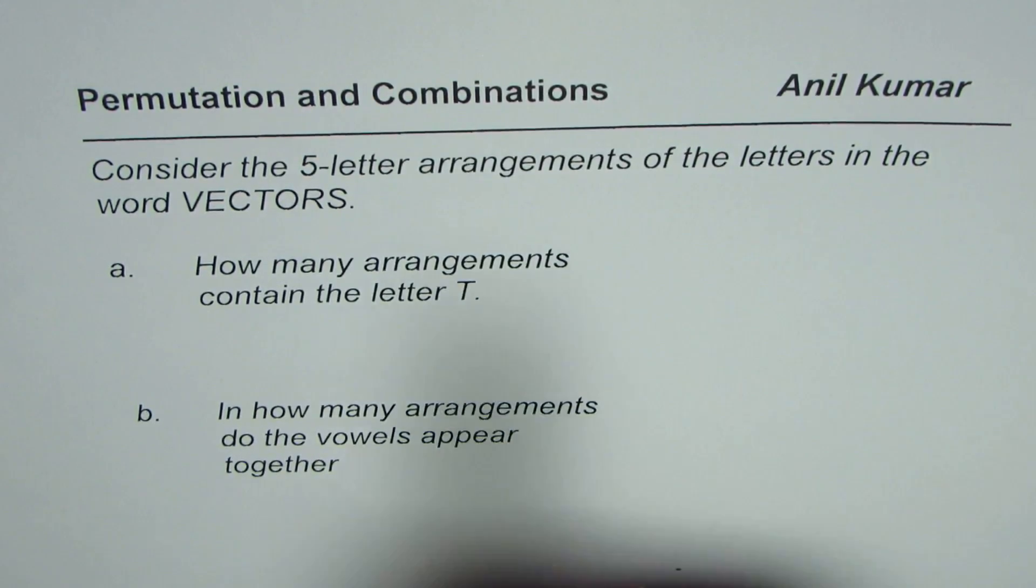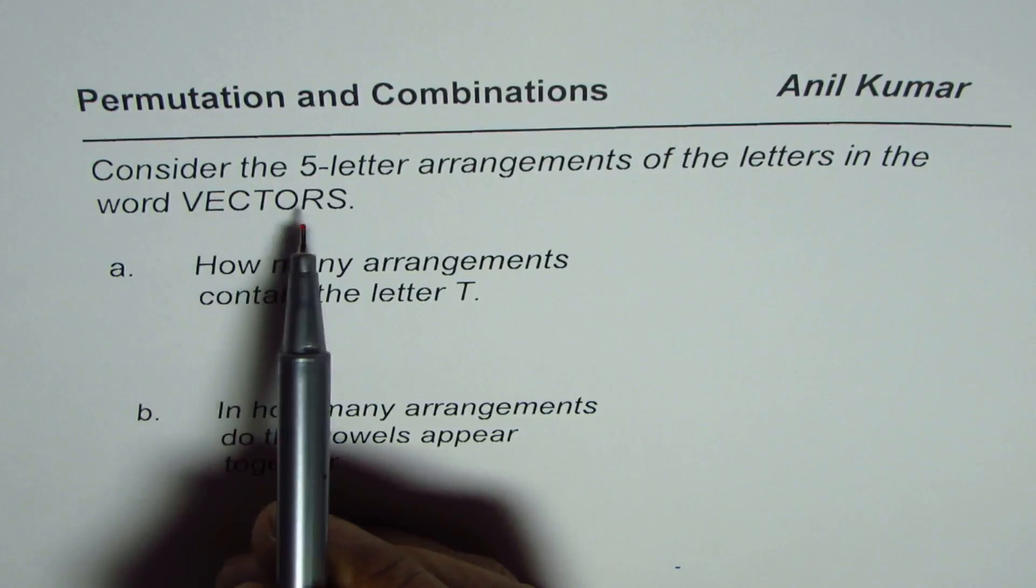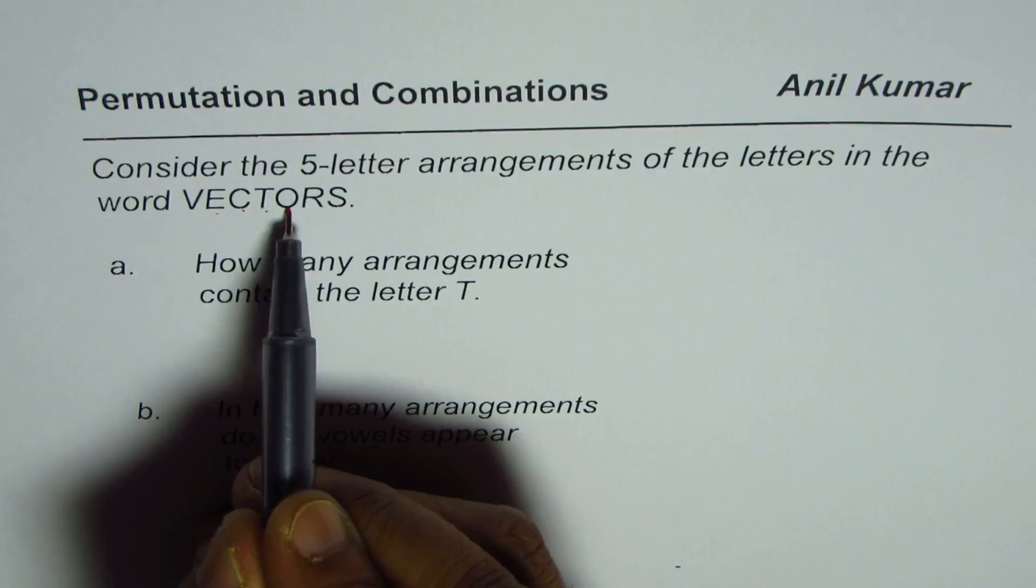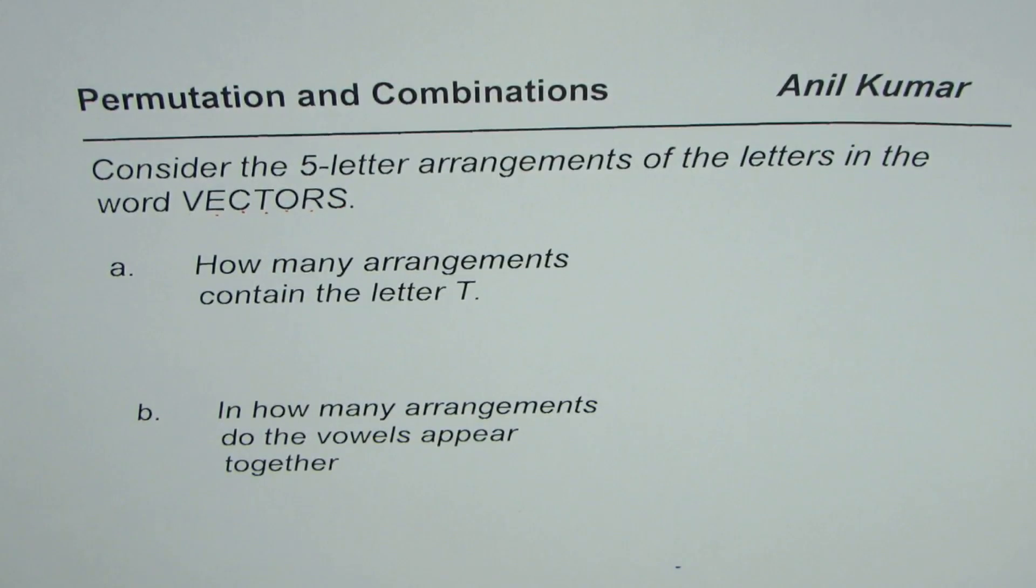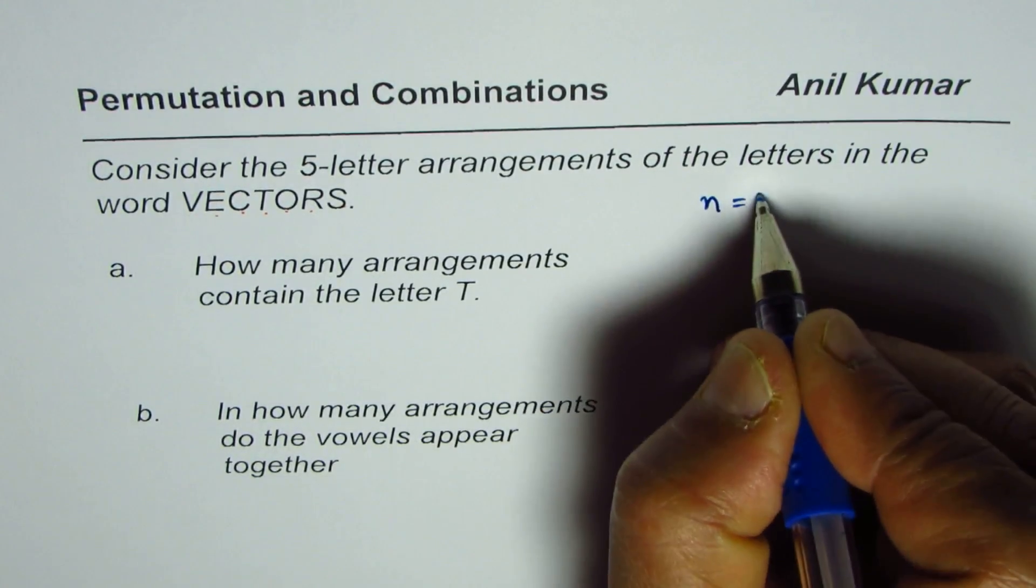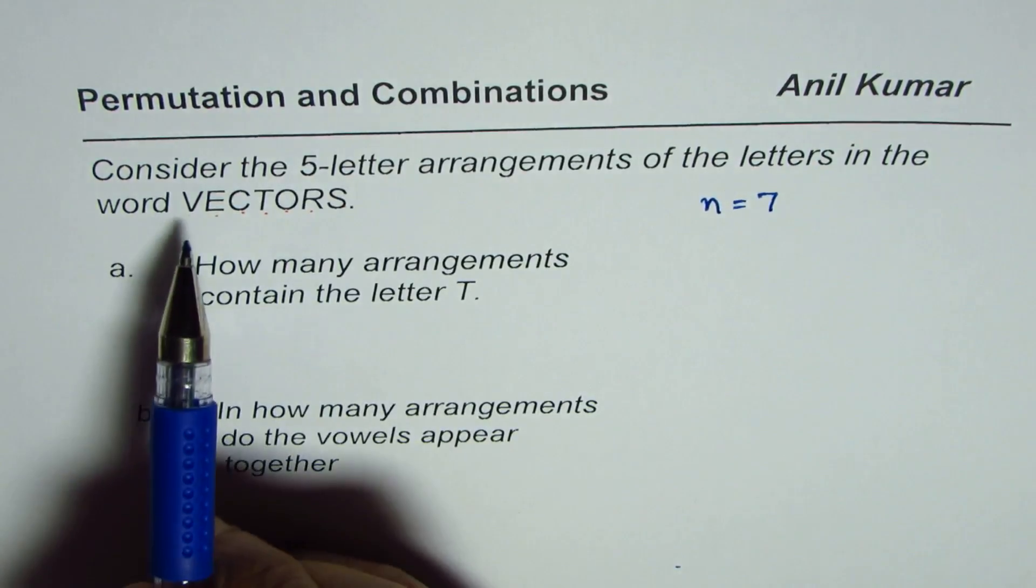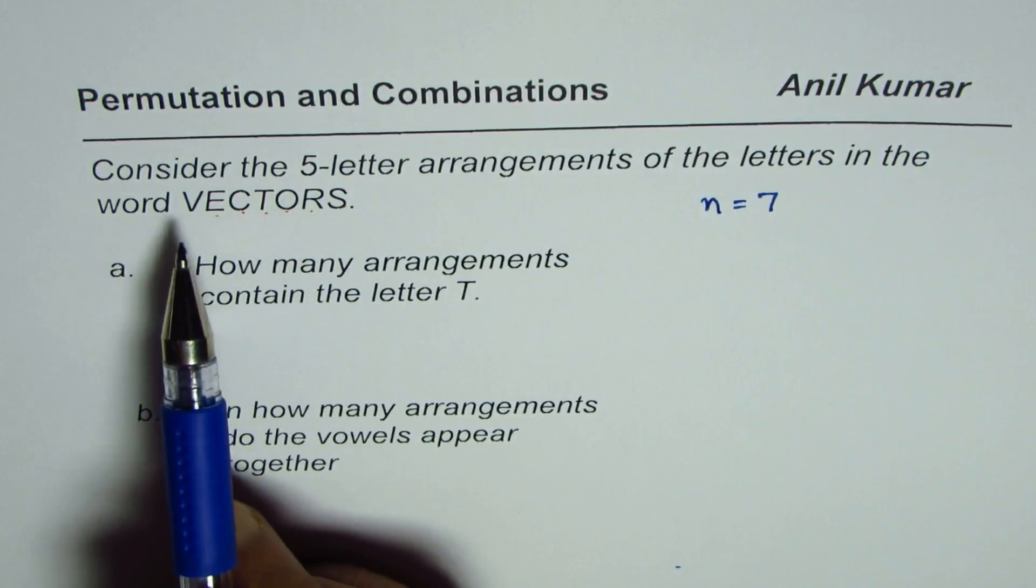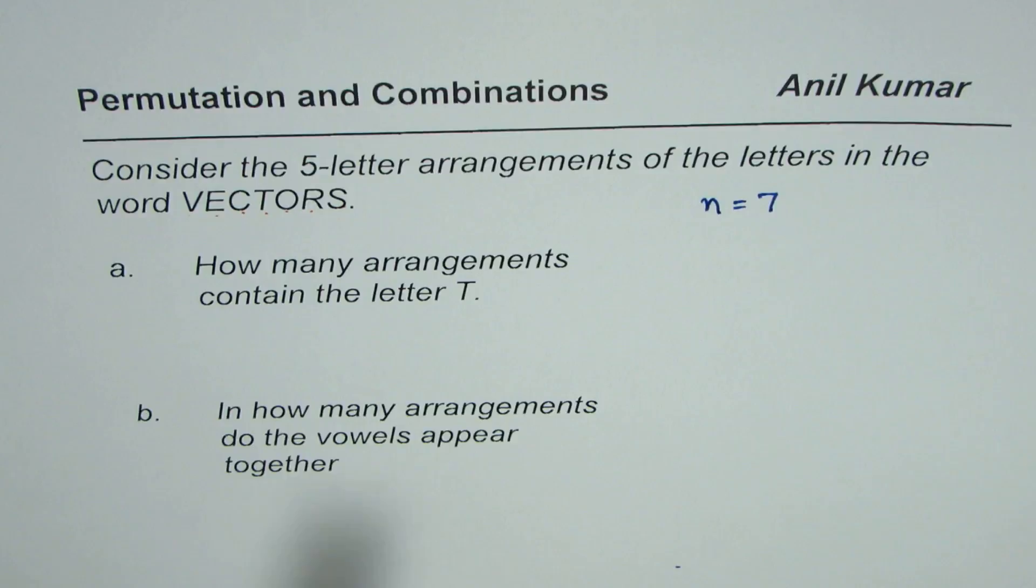Let us try to understand. In the word VECTORS, how many letters do we have? One, two, three, four, five, six, seven. So n is seven. Is any of the letter repeating? There is no repetition at all.